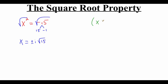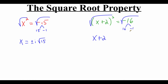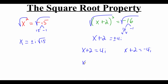We might also have an equation like x plus 2, squared, equals negative 16. Square rooting both sides: on the left the squared and square root cancel giving x plus 2. On the right we split negative 16 into 16 and negative 1 — the square root of 16 is 4, so we get plus or minus 4i. Splitting into two equations: x plus 2 equals 4i, and x plus 2 equals negative 4i. Subtracting 2 from both — we can't combine 2 and 4i since they're not like terms — so we get x equals negative 2 plus 4i, and x equals negative 2 minus 4i, putting the real number first and imaginary number second.